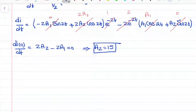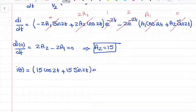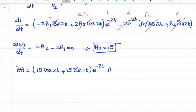We found both coefficients A1 and A2, so we can write the final equation for I(t): I(t) = (15·cos(2t) + 15·sin(2t))·e^(−2t) amps. I hope you understood this problem. If you have any questions, leave them in the comments down below, and I will see you in the next video. Thanks for watching.